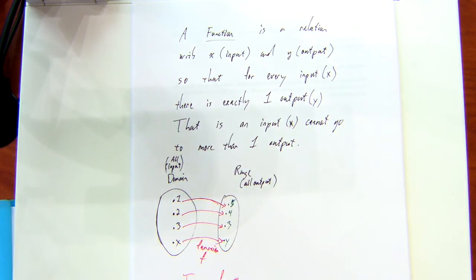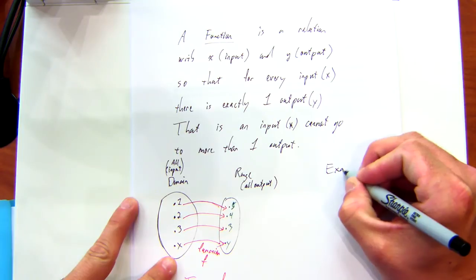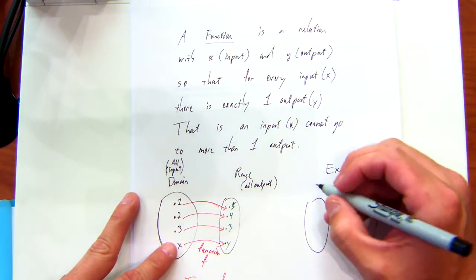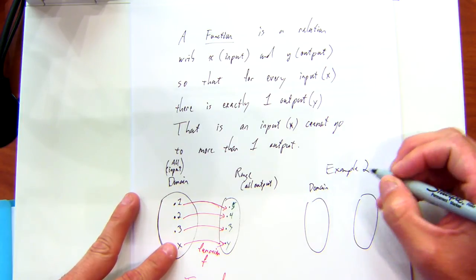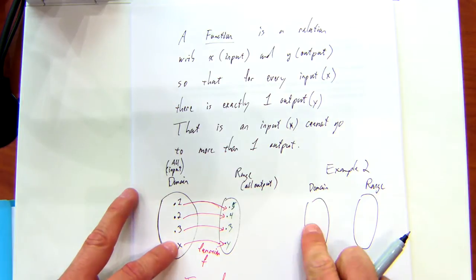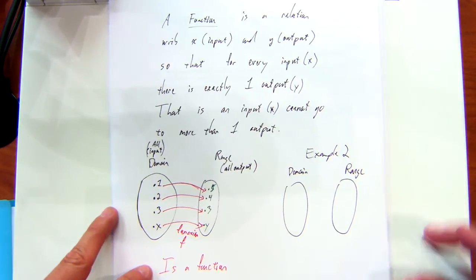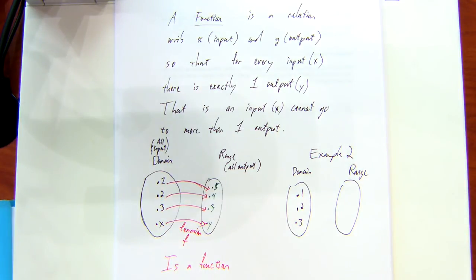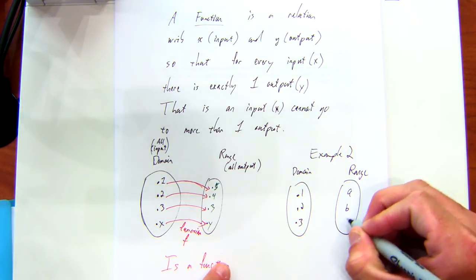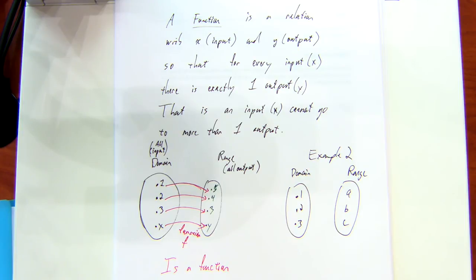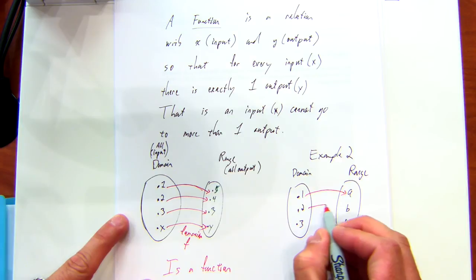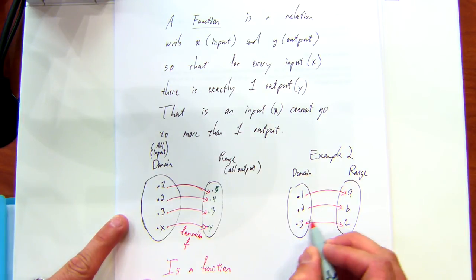Let's look at another example. Suppose I give you this. I'll call this my domain. We usually just by convention put the domain on the left and the range on the right. One, two, three. Let's go to A, B, and C. Doesn't have to be numbers. Let's do this. Let's say it goes to A, this one goes to B, and let's say this one goes to B and C.